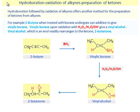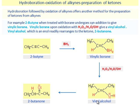Hydroboration-oxidation of alkynes — Preparation of ketones. Hydroboration followed by oxidation of alkynes offers another method for the preparation of ketones from alkynes. For example, 2-butyne, when treated with borane, undergoes syn-addition to give a vinylic borane. The vinylic borane, upon oxidation with hydrogen peroxide in the presence of water and hydroxide, gives a vinyl alcohol. The vinyl alcohol, which is an enol, readily rearranges to the ketone 2-butanone.